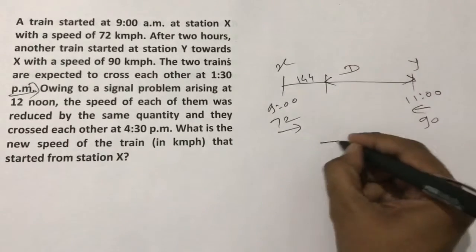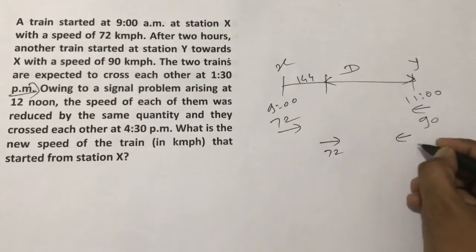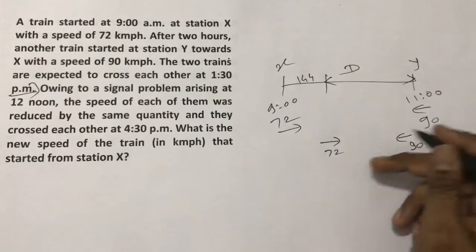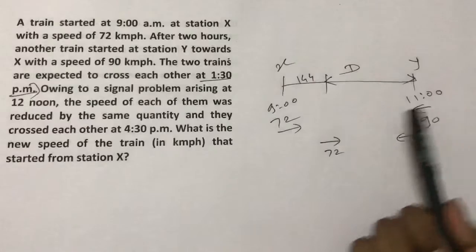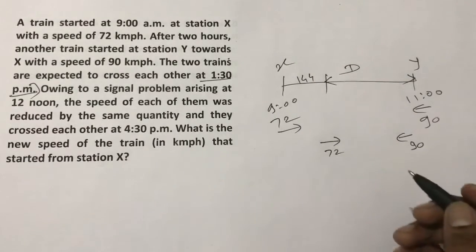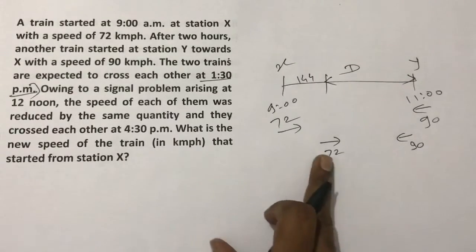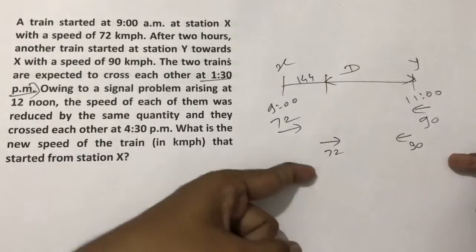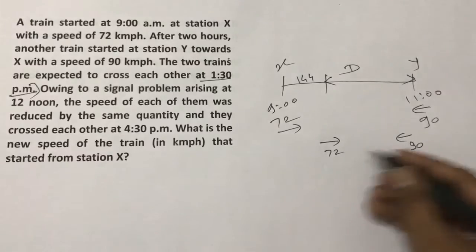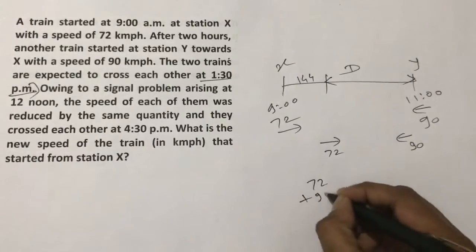After that, one train is going forward at 72 and the other is coming at 90. They are expected to cross each other at 1:30. After 11 am, every hour this train goes 72 forward and the other goes 90 forward. So the distance between these two, 72 plus 90, is being covered at 162 kmph speed.